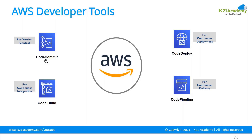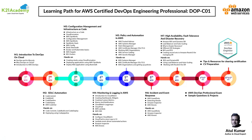CodeCommit is your replacement for GitHub — it hosts repositories within your Amazon account for greater security. CodeBuild lets you define specific build steps without managing build servers, handling compilation and testing easily. CodeDeploy deploys source or build files to EC2 instances, Lambda, or ECS containers. CodePipeline integrates all of these together in a pipeline similar to a Jenkins pipeline, allowing you to define and automate the entire build and release process.